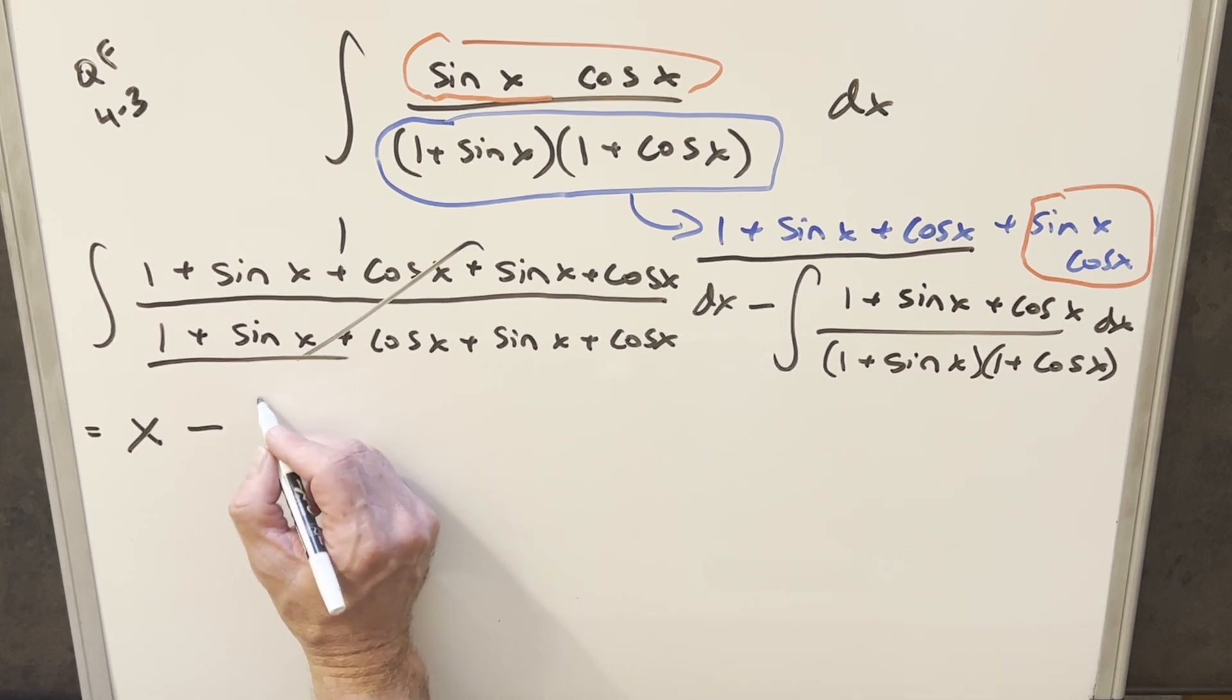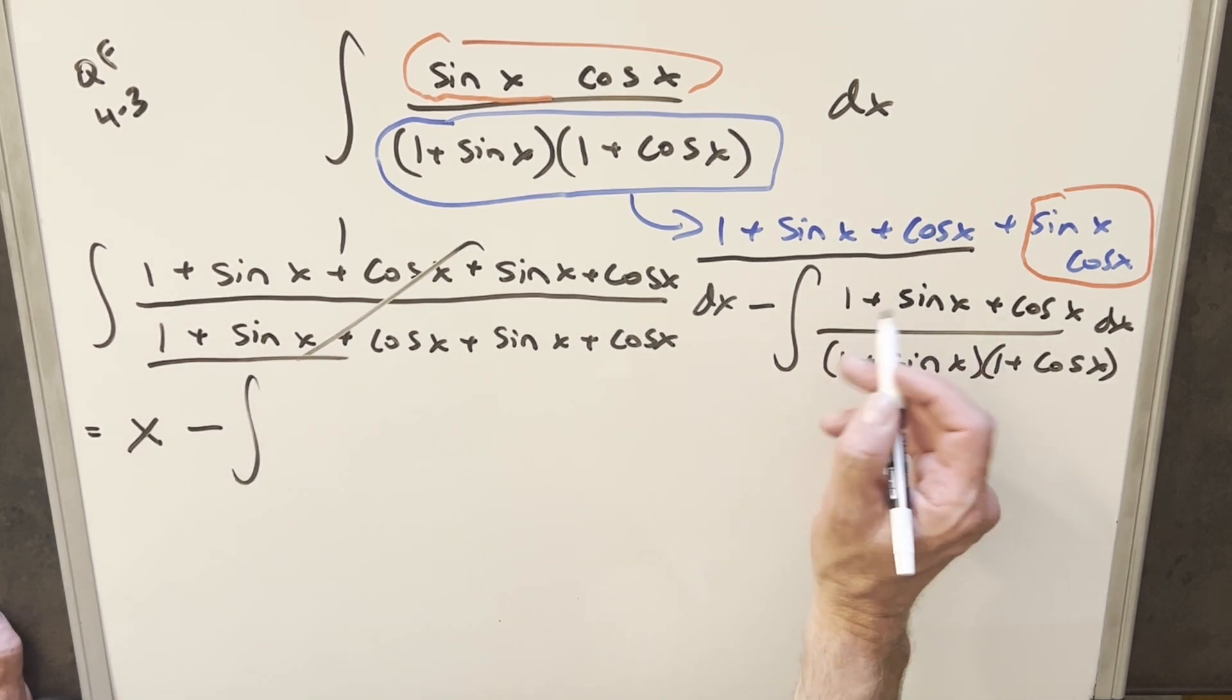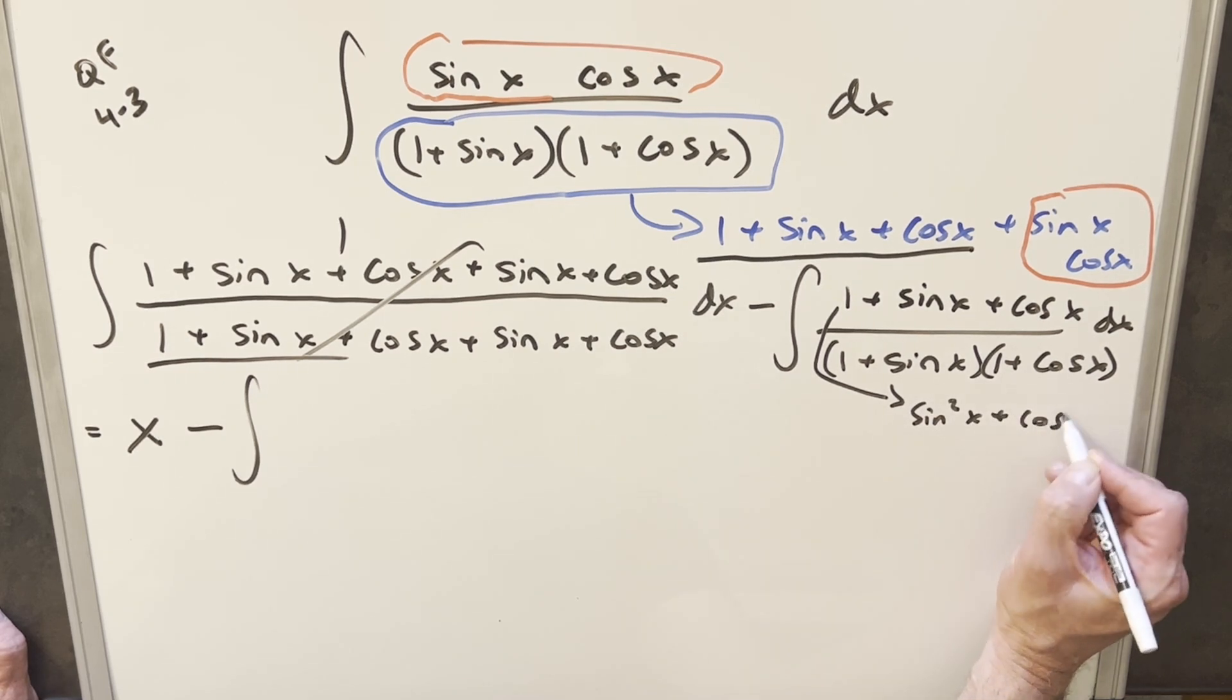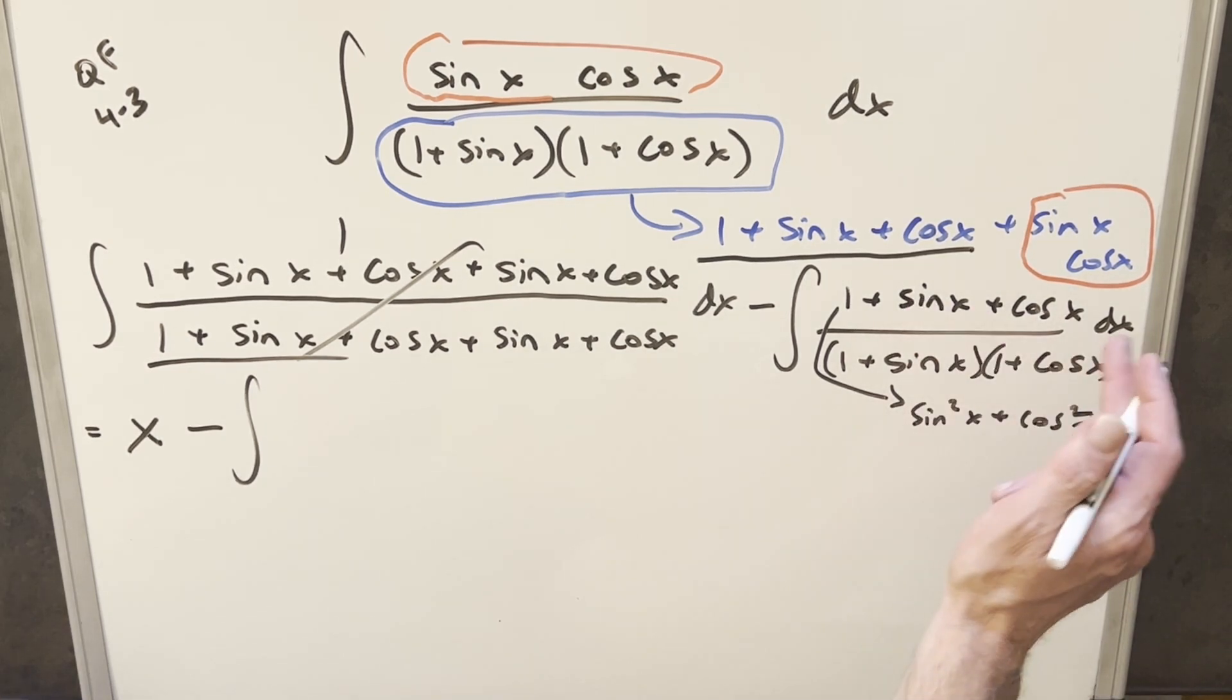Then for this second one, I'm going to rewrite again, but what I want to do is for this 1, I can write 1 as sine squared x plus cos squared x. That way it's going to work with these other terms.